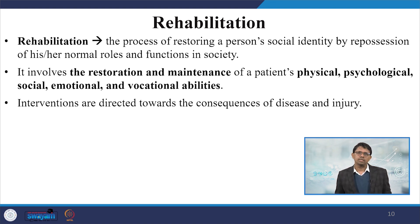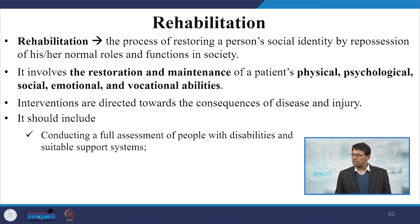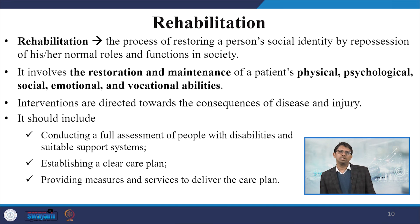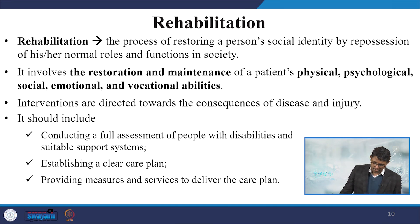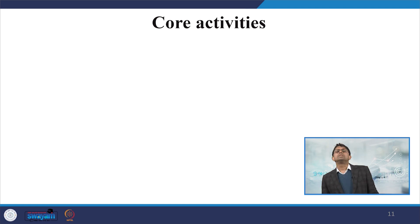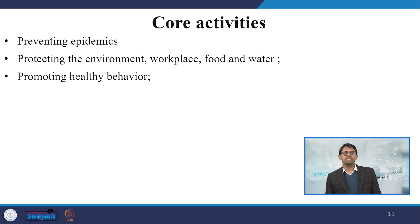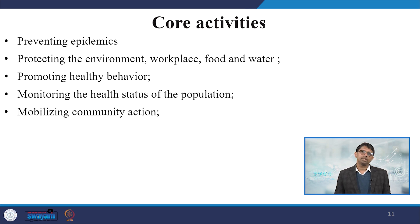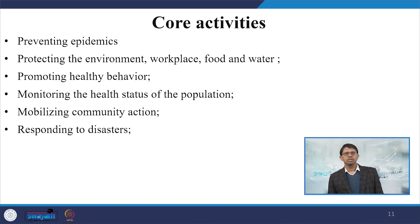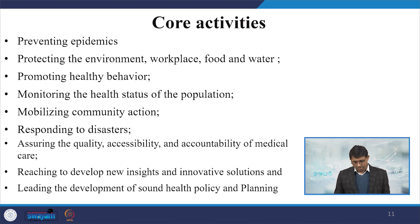Interventions in rehabilitation are directed towards the consequences of disease and injury. This should include conducting a full assessment of people with disability and suitable support systems, establishing a clear care plan, and providing measures and services to deliver that care plan. Core public health activities include preventing epidemics, protecting the environment, workplace, food and water, promoting healthy behavior, monitoring the health status of the population, mobilizing community action, responding to disasters, assuring quality, accessibility and accountability of medical care, and developing new insights and innovative solutions to support sound health planning and policy.